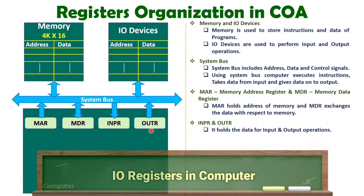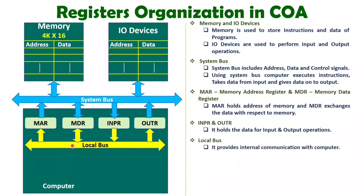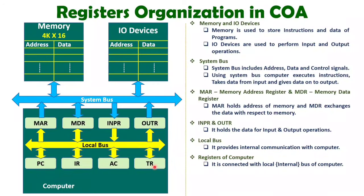The input and output registers are used to perform input and output operations. For example, if you want to give any input using a keyboard, that data will come inside the input register. When you want to display any data — for example, on a seven-segment display — that data should be given to the output register, and only then can it be displayed. Inside the computer, we have a local bus through which all the registers communicate with each other. Registers like PC, IR, AC, and TR that I already explained in my previous video are connected via this local bus.